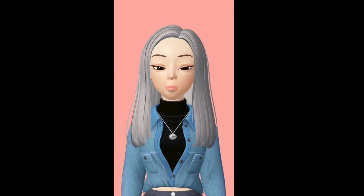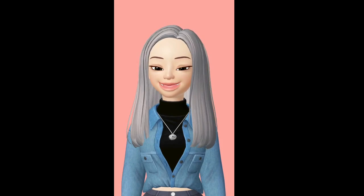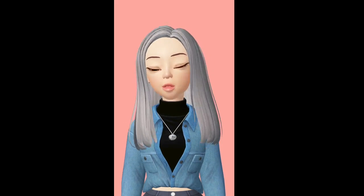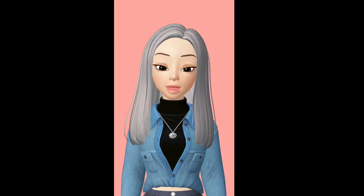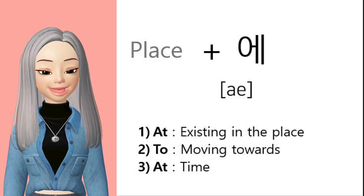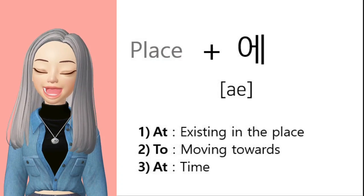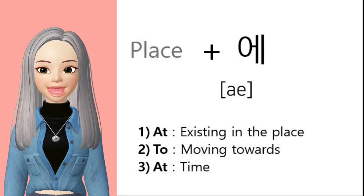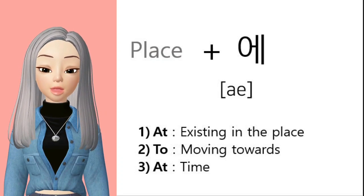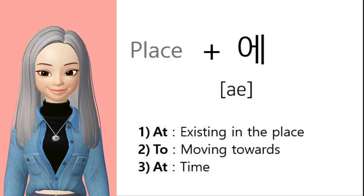안녕! Today, we're going to learn to make sentences about places. Remember, in Korean sentences, we have things called particles. For places, we use the particle 에. This is like 'at', 'to', and 'from' in English. So today, we're going to learn how to use these. Let's go!